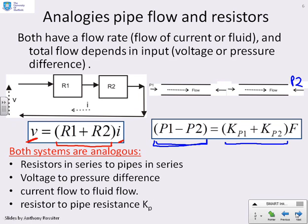So the two systems are analogous. Resistors in series are analogous to pipes in series. The voltage is analogous to the pressure difference, the current flow to the fluid flow, and the electrical resistance to the pipe resistance.